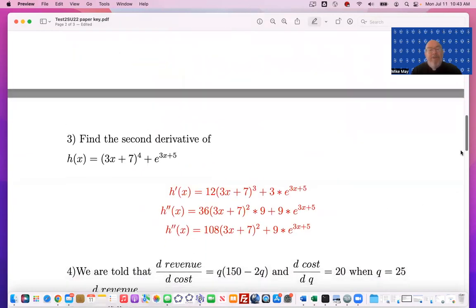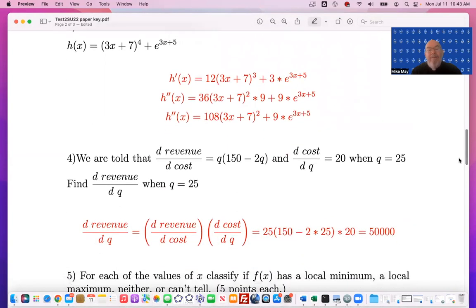On to page 2. We're doing a second derivative. That's just the derivative of the derivative. I'm going to do a chain rule on the first term and e to the x on the second term, and so the derivative of 3x plus 7 all to the 4th is 4 times 3 times 3x plus 7 cubed.